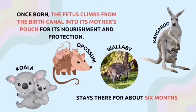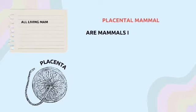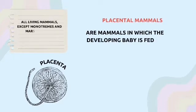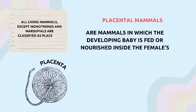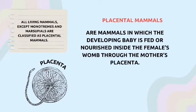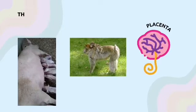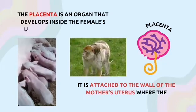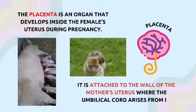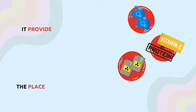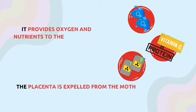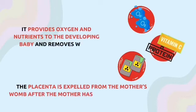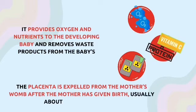Examples of marsupials are kangaroo, koala, and wallaby. All living mammals, except monotremes and marsupials, are classified as placental mammals. Placental mammals are mammals in which the developing baby is fed or nourished inside the female's womb through the mother's placenta. A placenta is an organ that develops inside the female's uterus during pregnancy. It is attached to the wall of the mother's uterus where the umbilical cord arises from it. It provides oxygen and nutrients to the developing baby and removes waste products from the baby's blood. The placenta is expelled from the mother's womb after the mother has given birth, usually about 5 to 30 minutes.